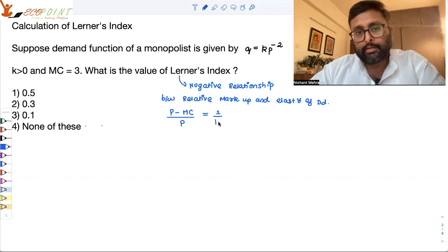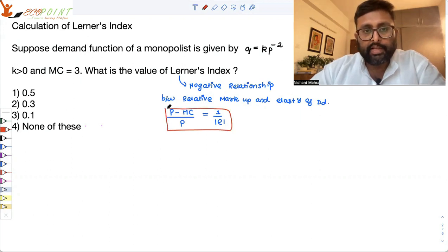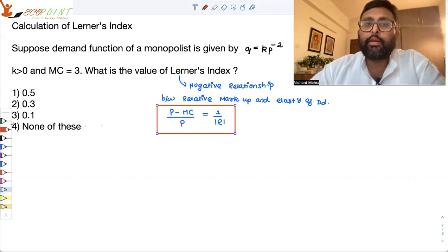This will become the relative markup. And this is inversely related to the elasticity of demand. This is the formula for Lerner's Index. p minus MC upon p is nothing but the Lerner's Index.